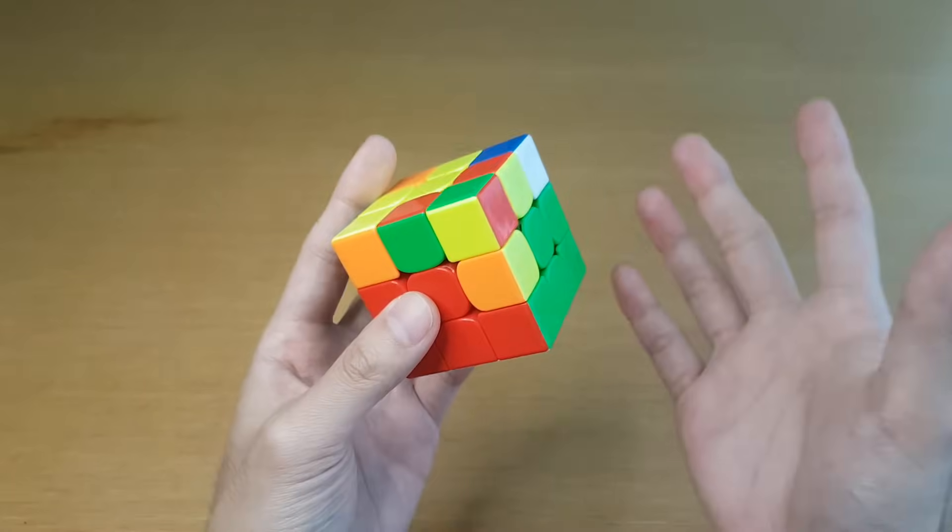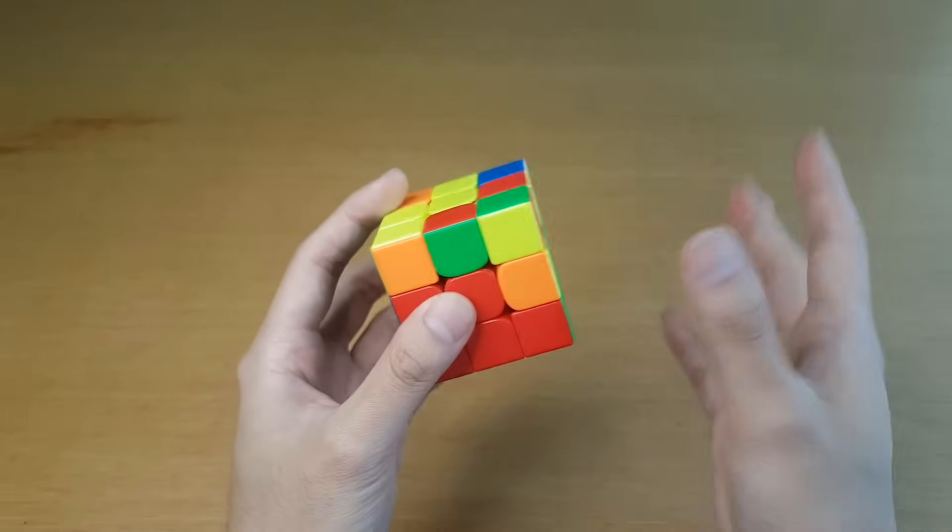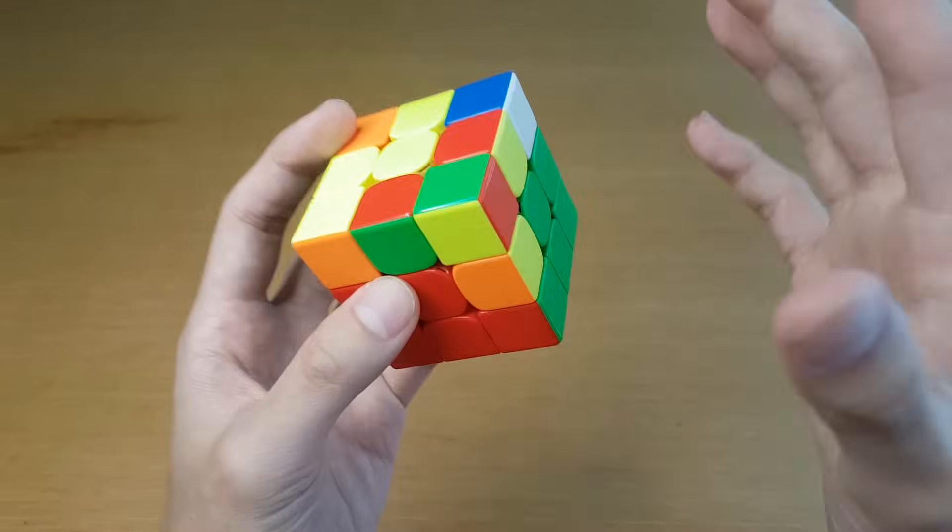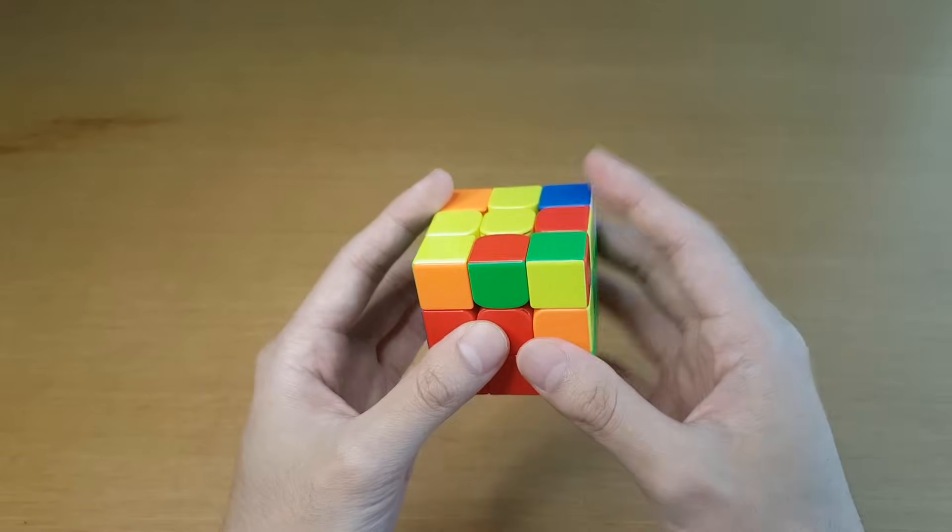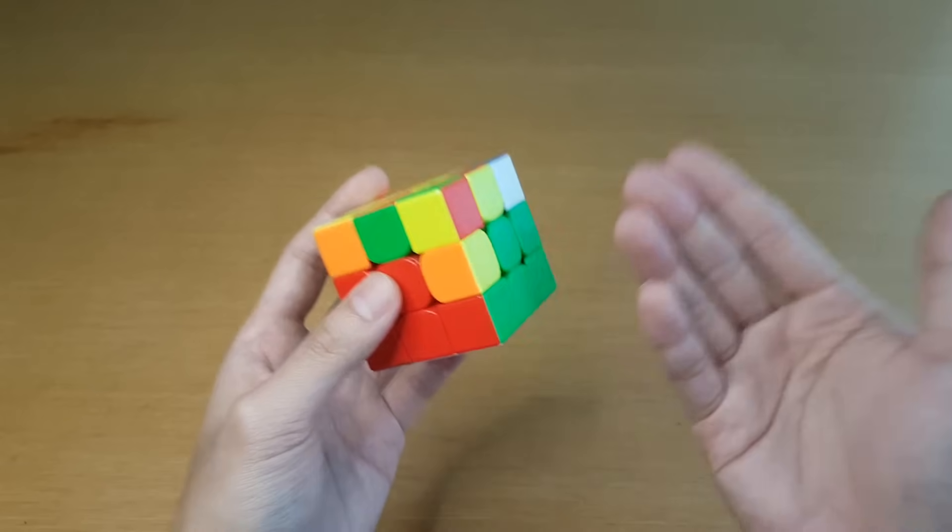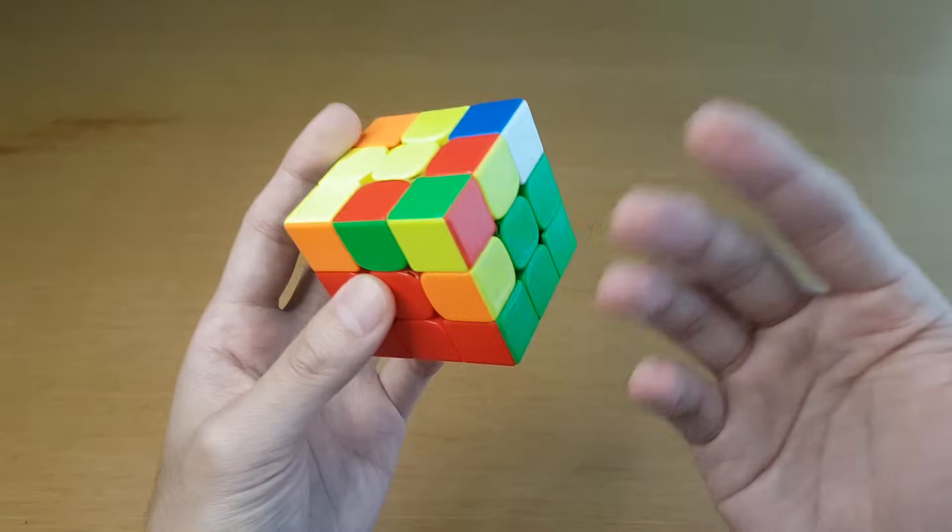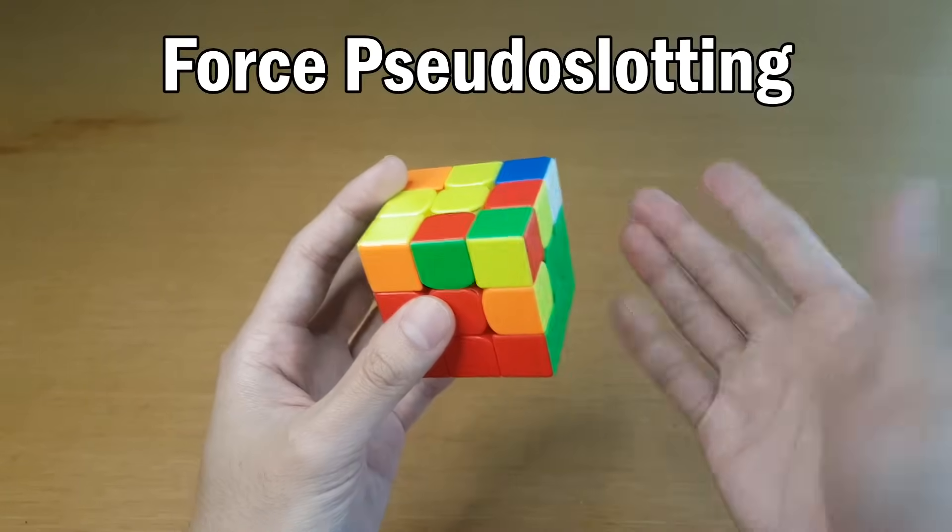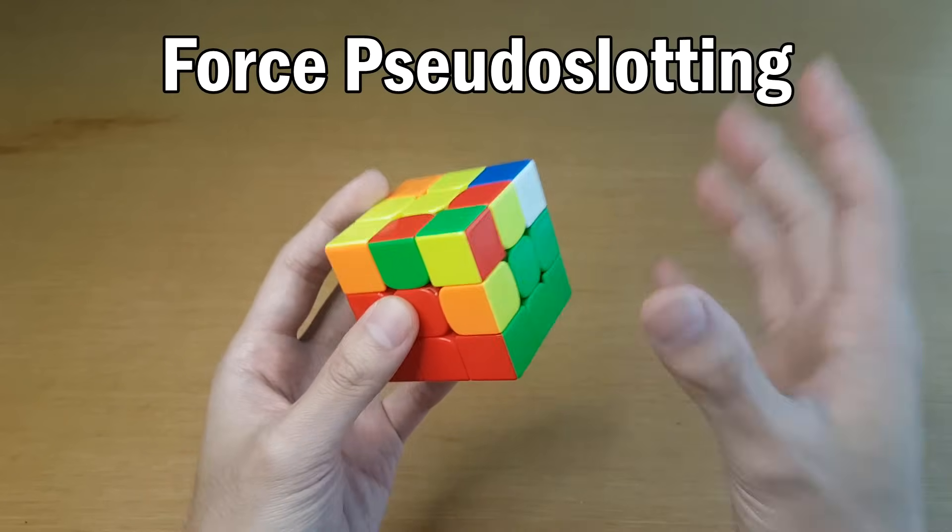But that sort of situation where a corner and edge just solve themselves and set up perfectly for you to do pseudoslotting, that is quite rare. So you shouldn't rely on that happening. And if you do, you will almost never see a pseudoslotting case. So you will not practice it and it will actually slow you down. So you should definitely force pseudoslotting to happen sometimes. And I'll show you the best cases where you can save the most moves.